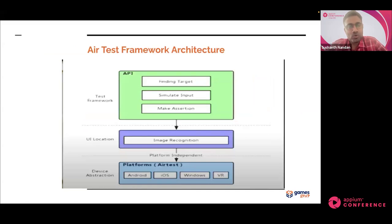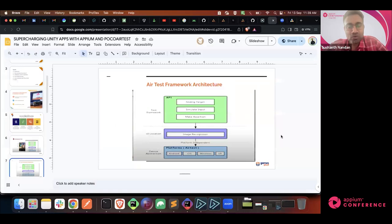Now we will see what is AirTest. POCO and AirTest are similar but the approach is different. POCO is more on UI hierarchy - it is element-based automation. It looks for identifying elements in the UI. AirTest recognizes the image and using the coordinates, it clicks on the image. So it is based on image recognition. It also supports multiple platforms like Android, iOS, Windows, etc. Let me show you the AirTest IDE and how you can interact with any game objects.